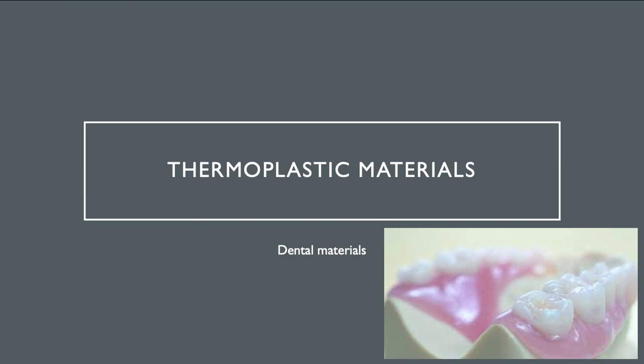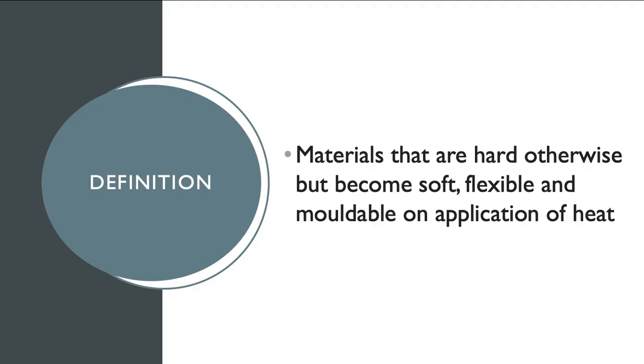As the name indicates, 'thermal' has something to do with heat, and 'plastic' means they are moldable. So if we go to the definition: materials that are hard otherwise, but become soft, flexible, and moldable on application of heat.